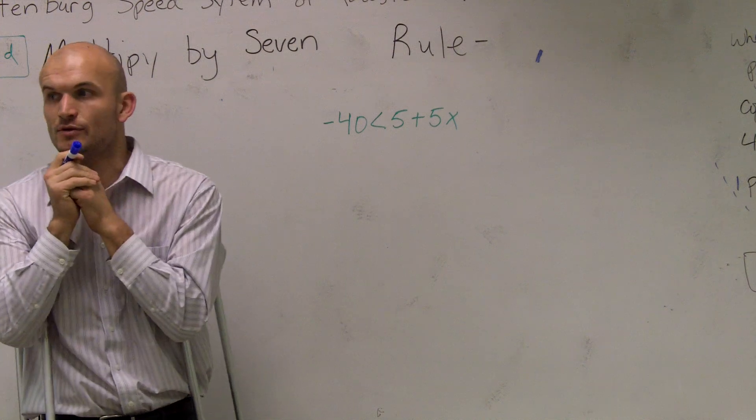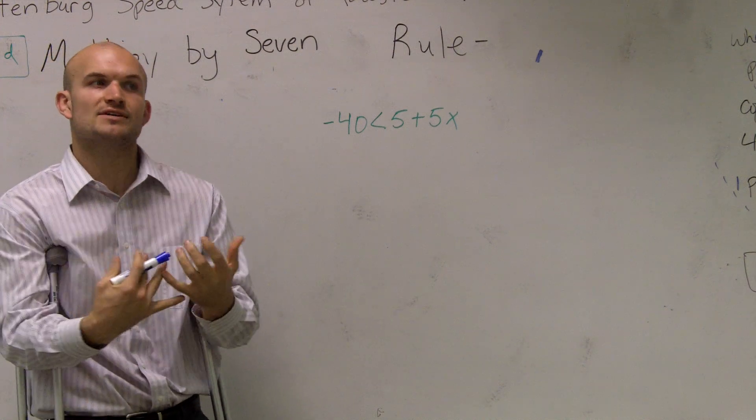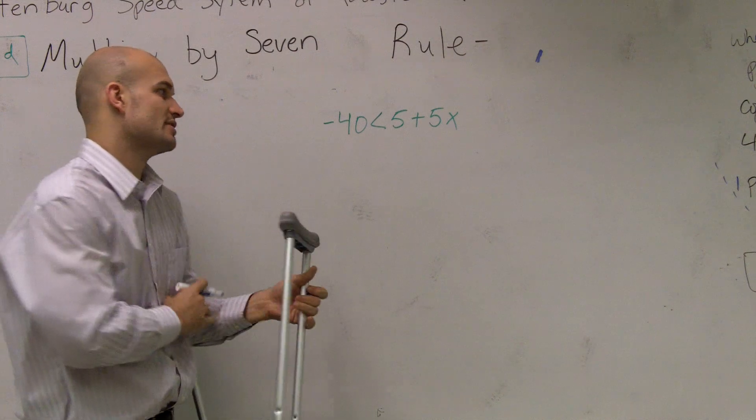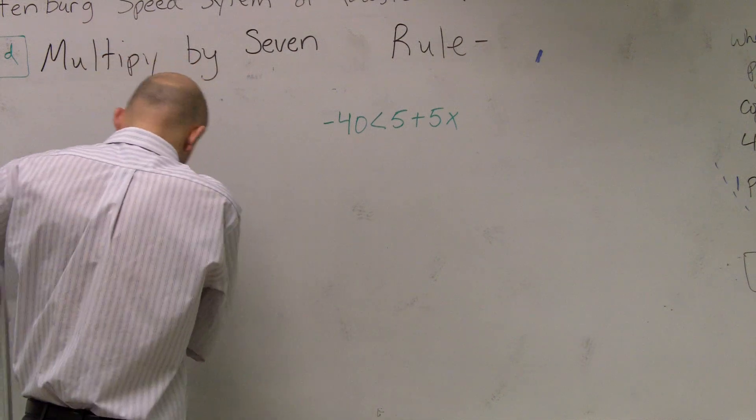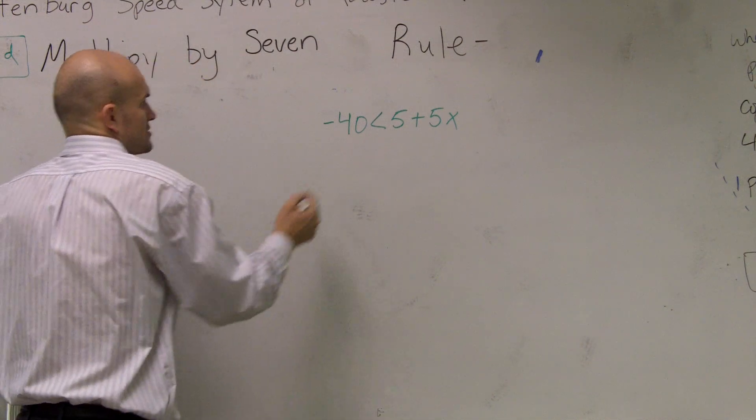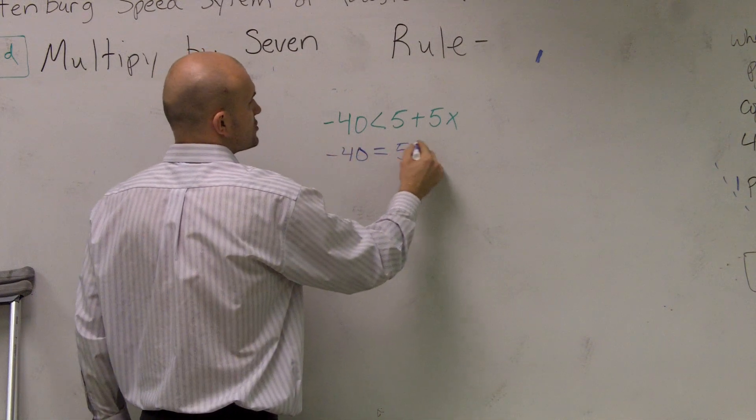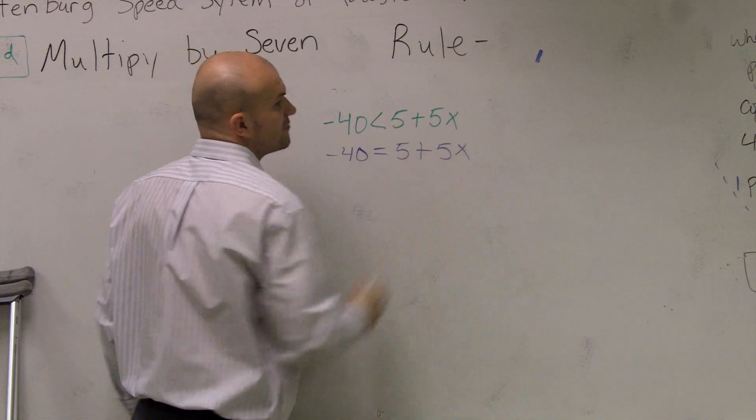So what we're going to do is we need to solve a two-step equation and then graph. Remember guys, when we're solving two-step inequalities, we want to make sure we transfer it to an equation. So, this is how it works. I'm going to write -40 = 5 + 5x.